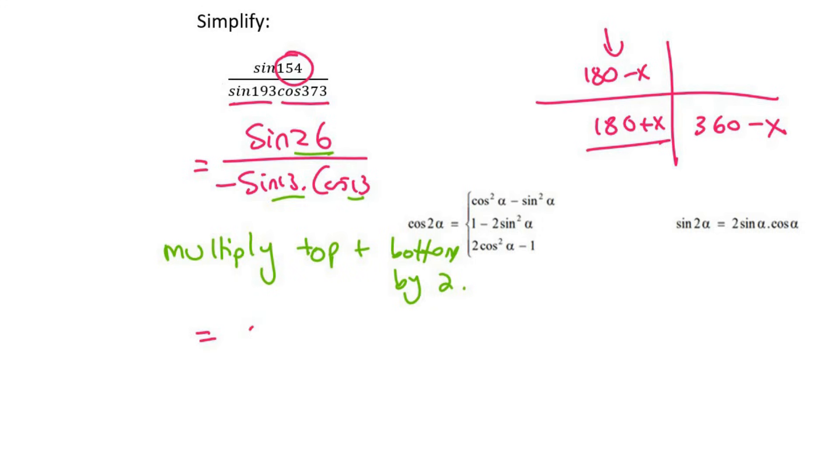Because at the top, we're then going to end up with 2 sin 26. And at the bottom, you're going to end up with negative 2 sin 13 cos 13. So can you see at the bottom now, we've got that, which is the same as that. So we can rewrite it like that.